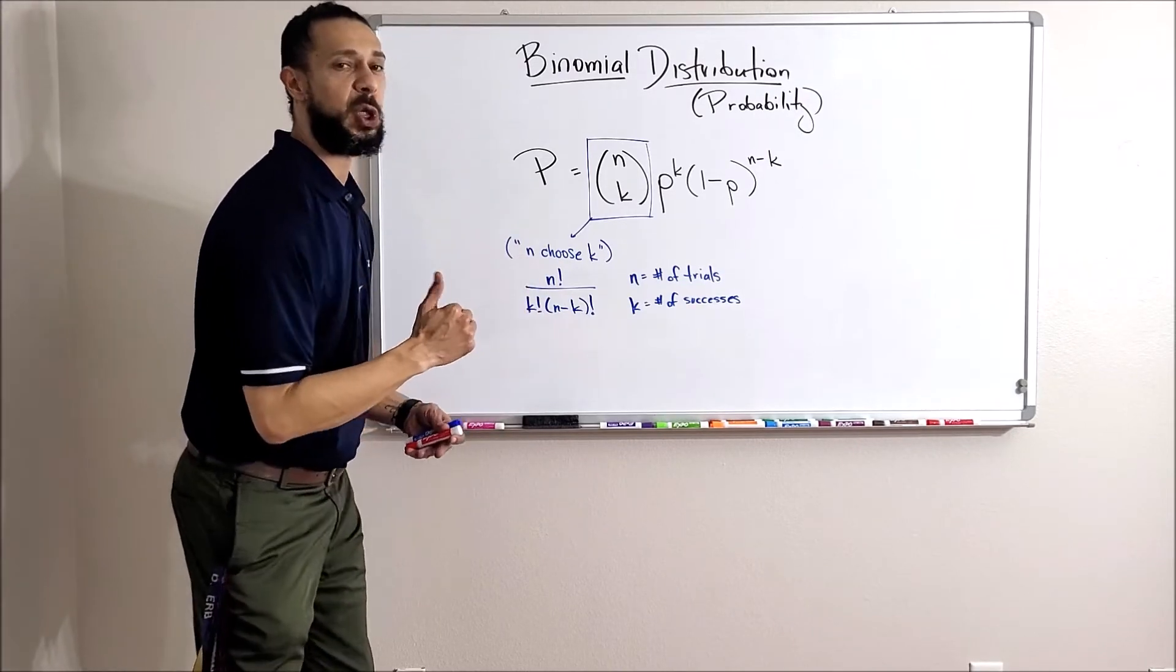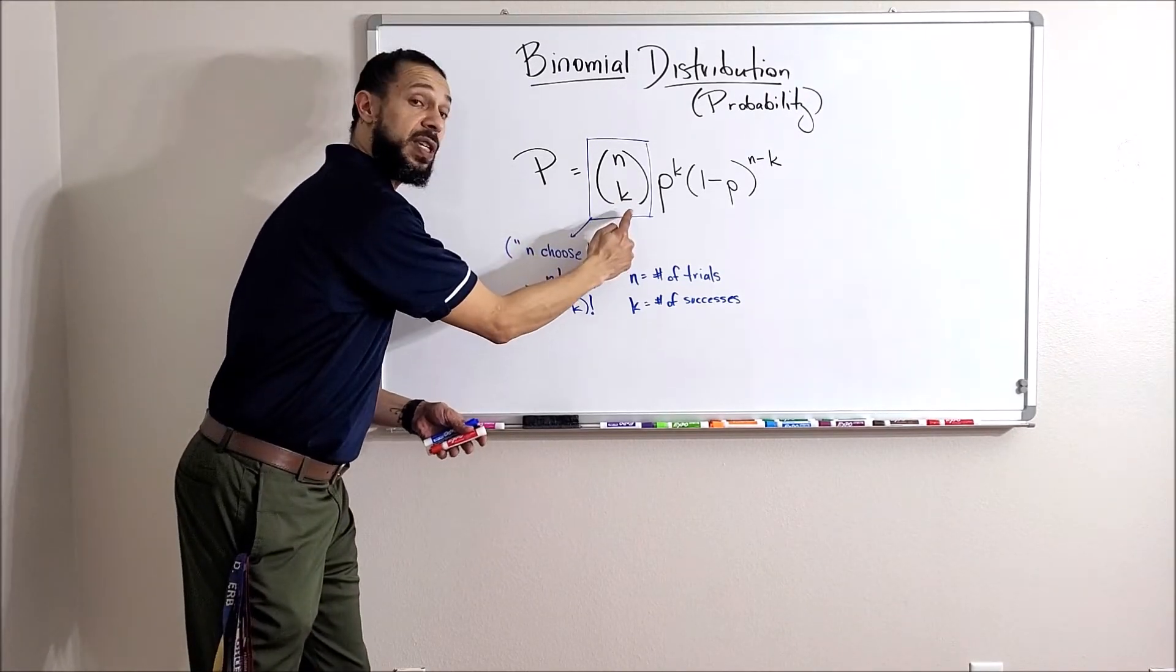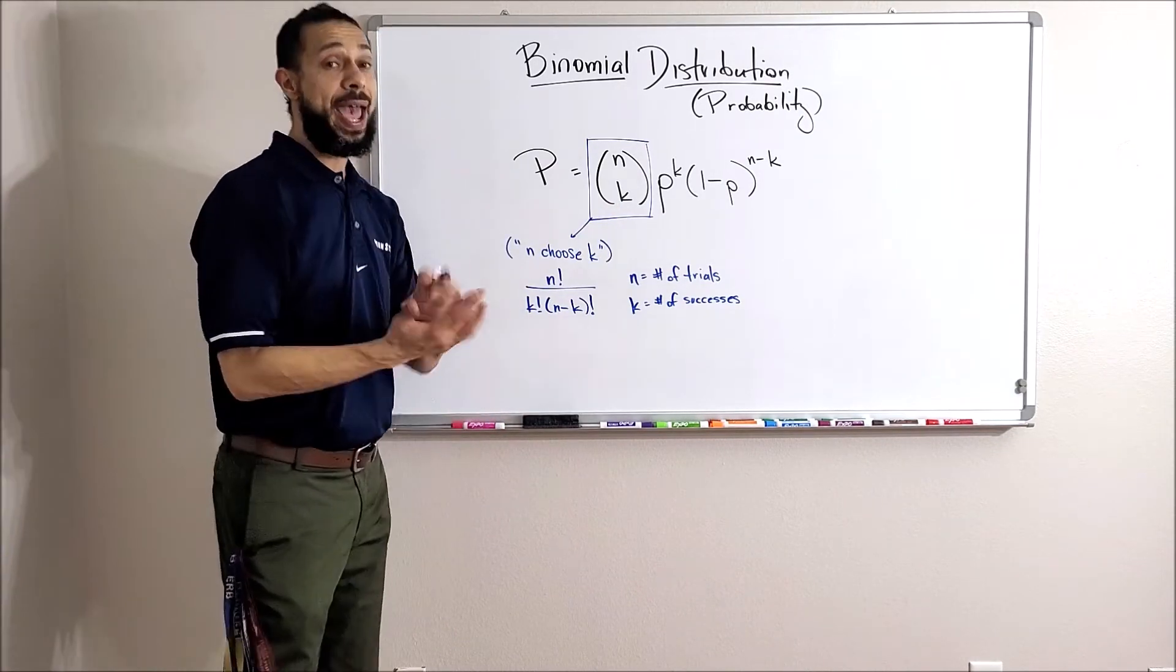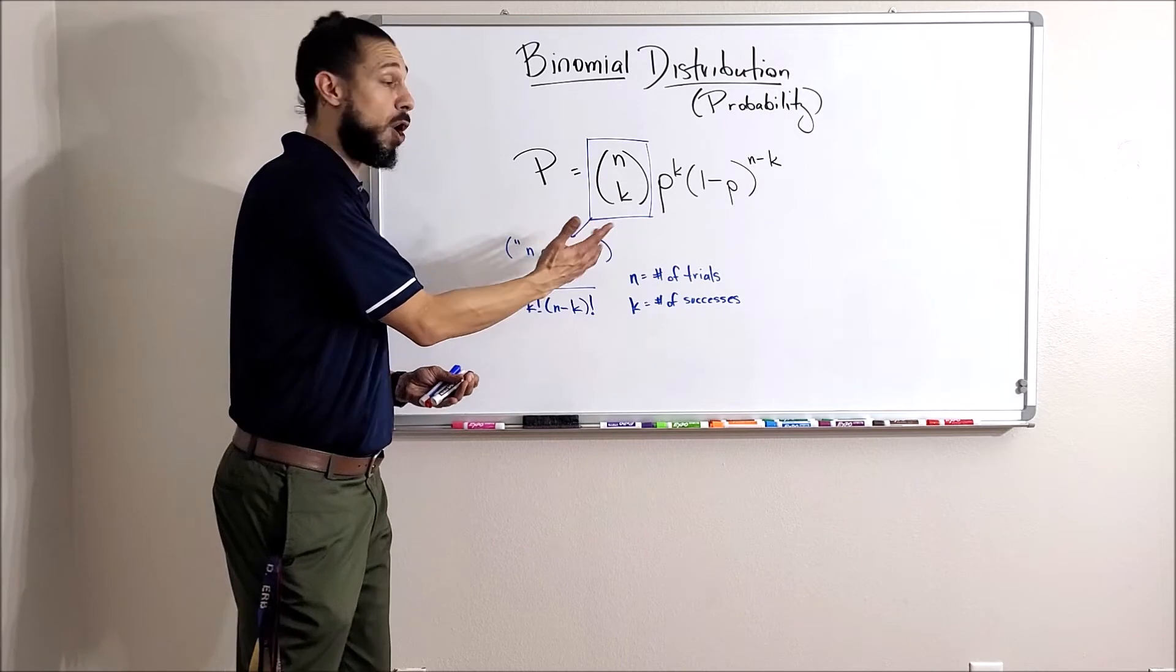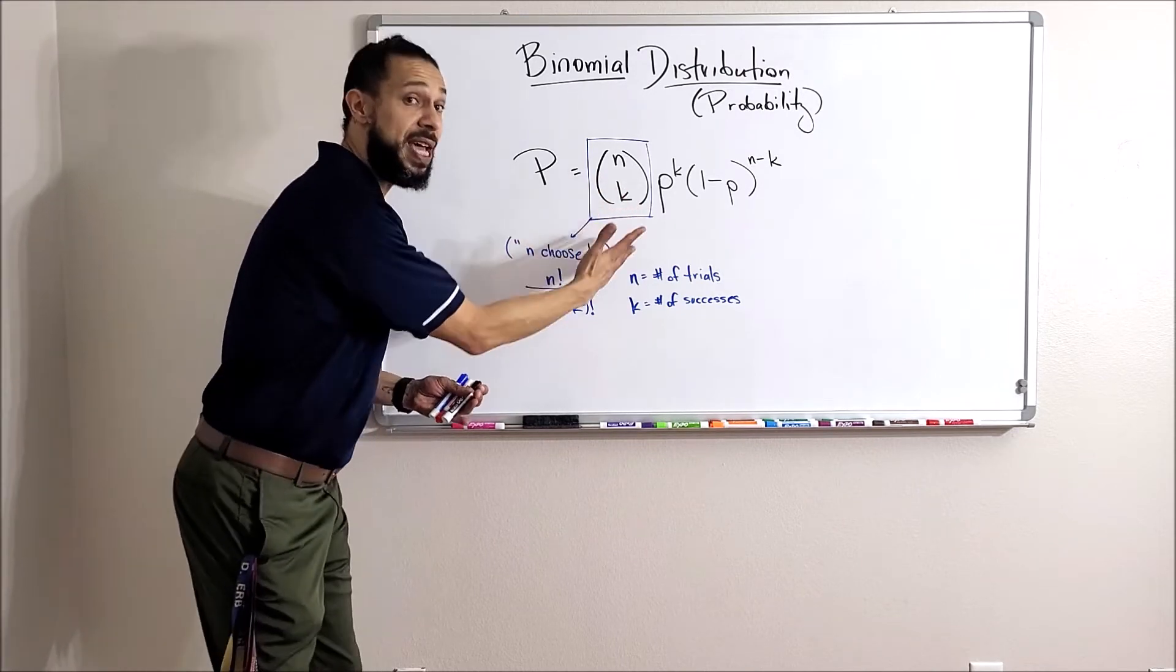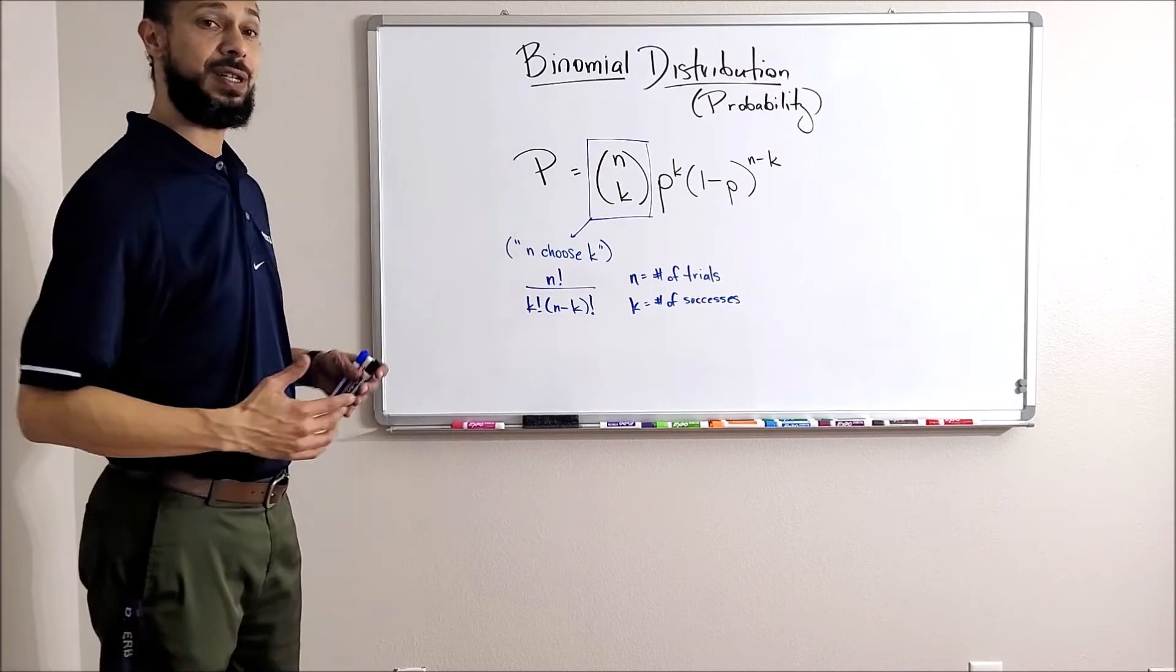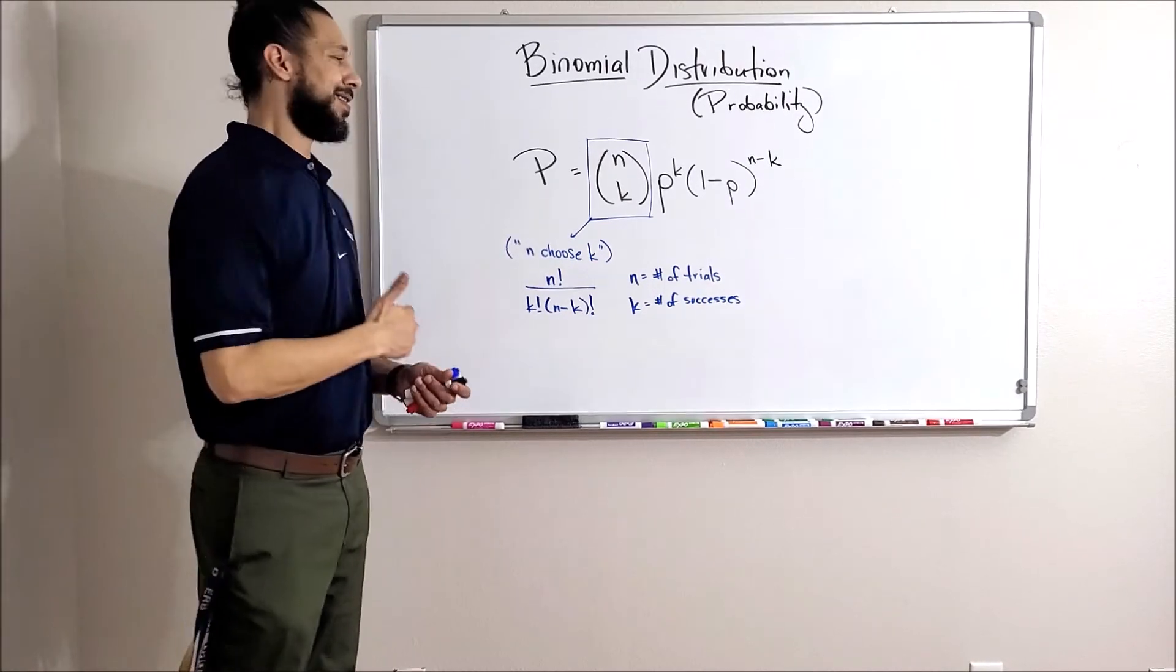The top number in your choose is going to be the number of trials—how many times you're doing the thing, how many times you're flipping the coin. The bottom number is how many successes. If I label heads as success and want to know how many combinations there are where there are six heads or three heads out of those 10 flips, I would do this choose function.